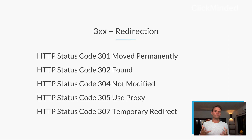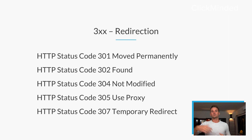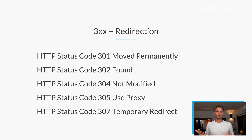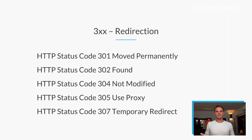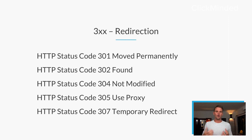The 300 block is for redirects — you requested an address but you were sent somewhere else. There are a bunch of different types of redirects: a 301 redirect, a 302, a 304, a 305, and a 307. We're going to talk about all of these a little bit more, but any status code in the 300 block will be a redirection request.